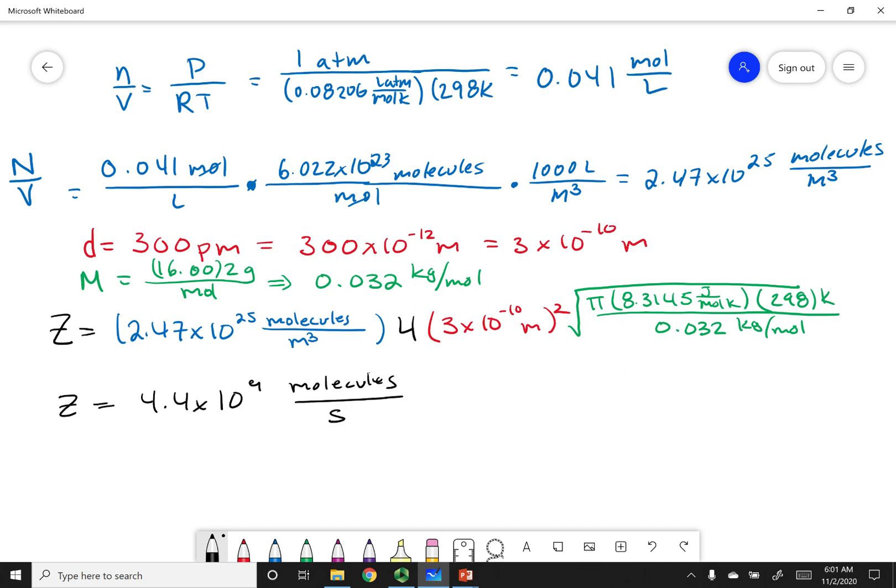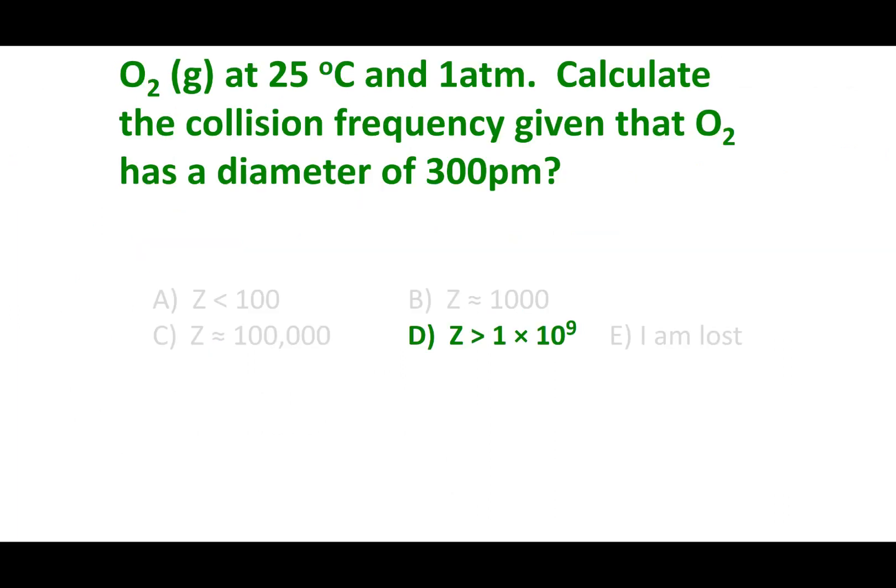I want you to realize that those molecules are colliding. So instead, what you should write down is that this is collisions per second. What we really calculated was how many times those oxygen molecules are bumping into each other. So right here is the correct answer.